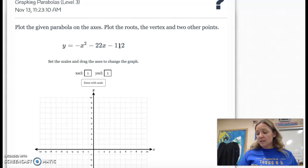And then I'm going to factor the x squared plus 22x plus 112 to x plus 8 and x plus 14.